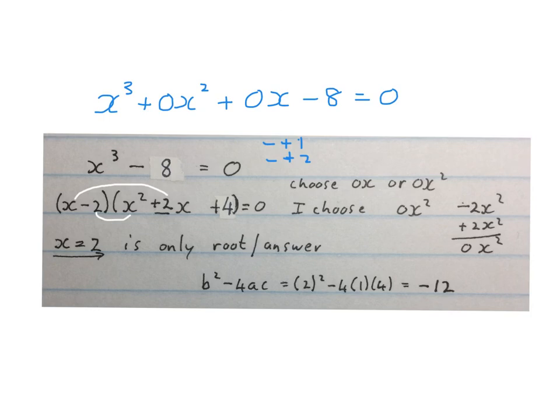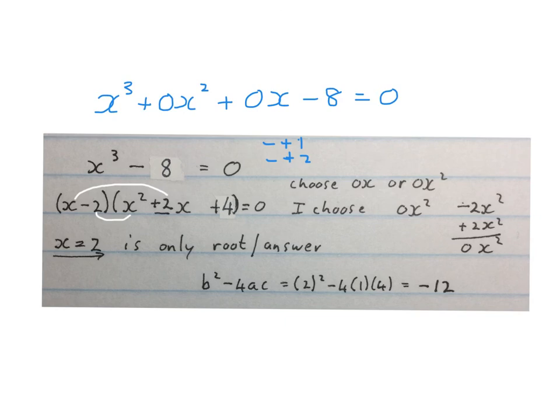Using the discriminant and plugging in the coefficients of the quadratic bracket, you get minus 12 — and since the discriminant is negative, the quadratic gives no real roots. So x equals 2 is the only answer. Please stop the video and get your brain around this. Please indicate whether you liked or disliked the video and subscribe to the channel. Enjoy maths!